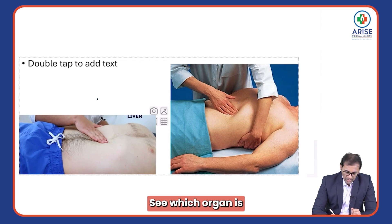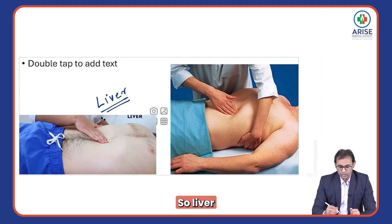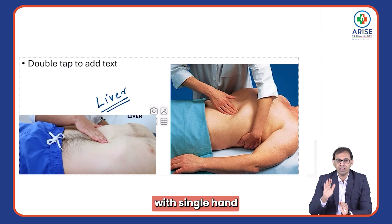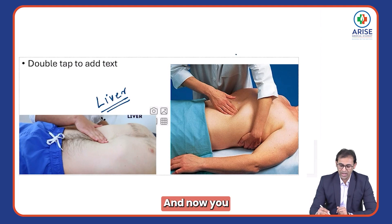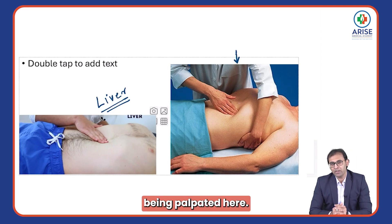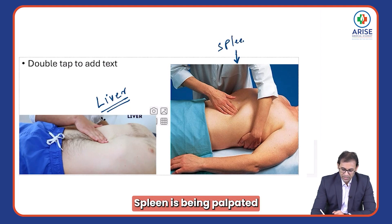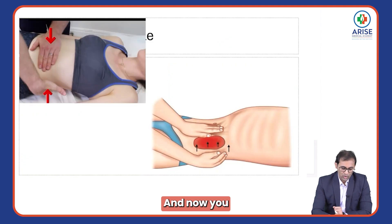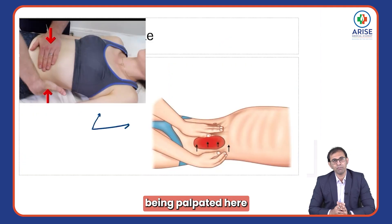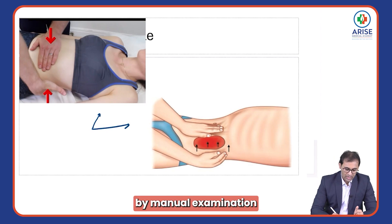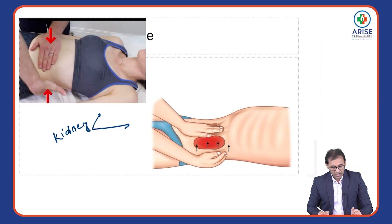Now let's learn the palpation of different organs. In this photo, the organ being palpated is the liver. The liver can be palpated with a single hand or both hands. In the next photo, the spleen is being palpated. And in the following two photos, bimanual examination of the kidney is being performed.